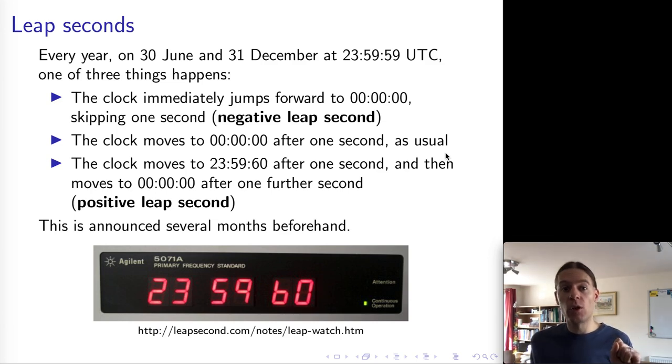And so depending on what the astronomers decide, then the clock may or may not have an extra second. And so this means actually that, so if there's a second subtracted, then there is no 23:59:59 second. The clock goes 58 and then immediately jumps to zero after one second. So the 59 second is simply skipped. Or we could have a regular second. Or we can have an additional second in which the clock goes from 59:59 to 60 and then to zero after two seconds. So we've inserted an extra second at 23:59:60.